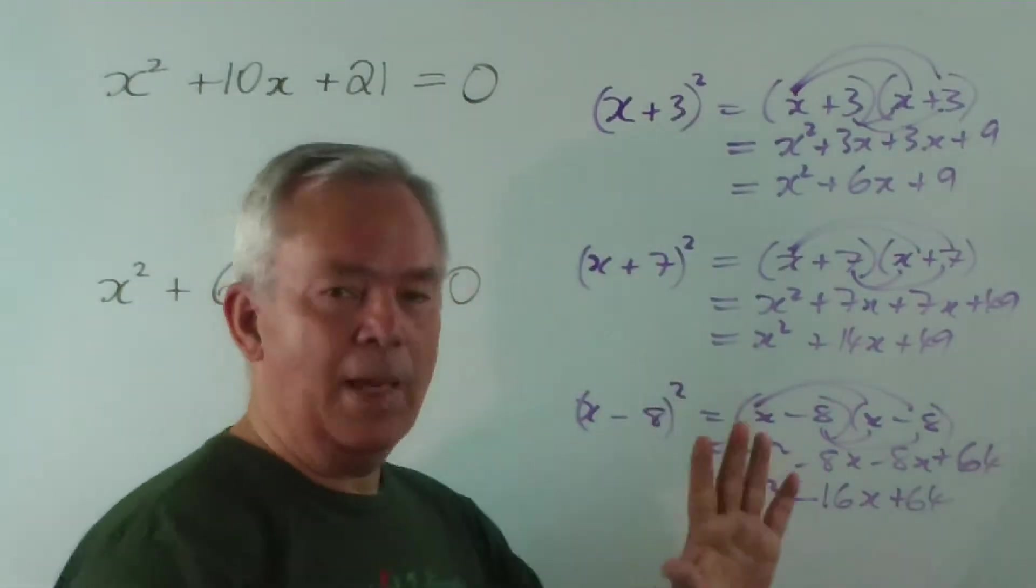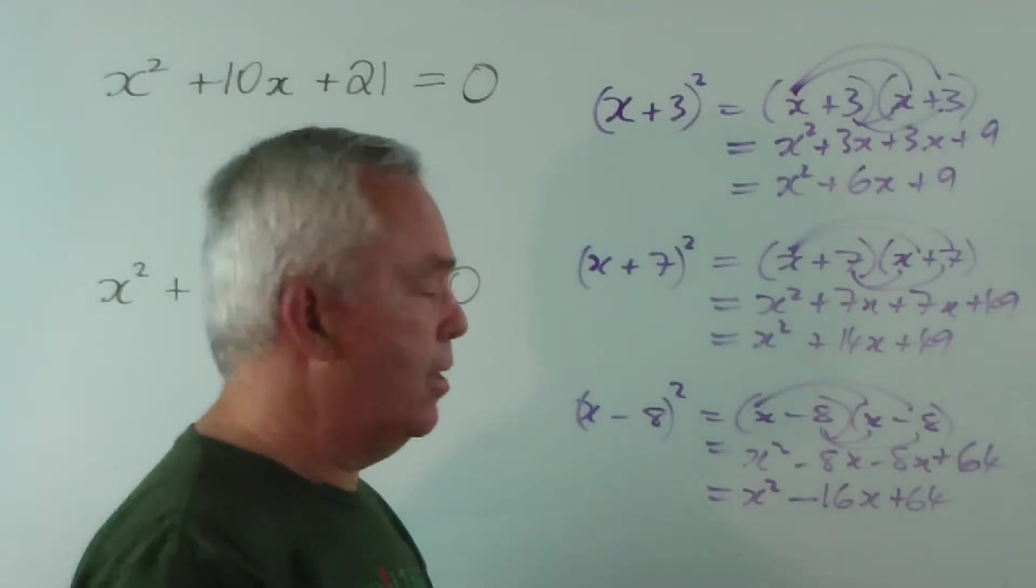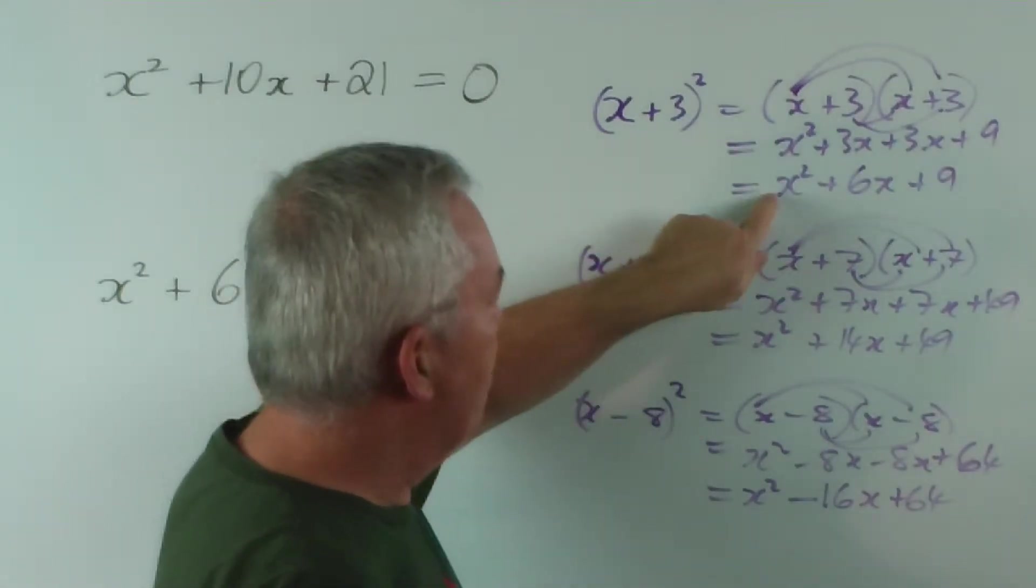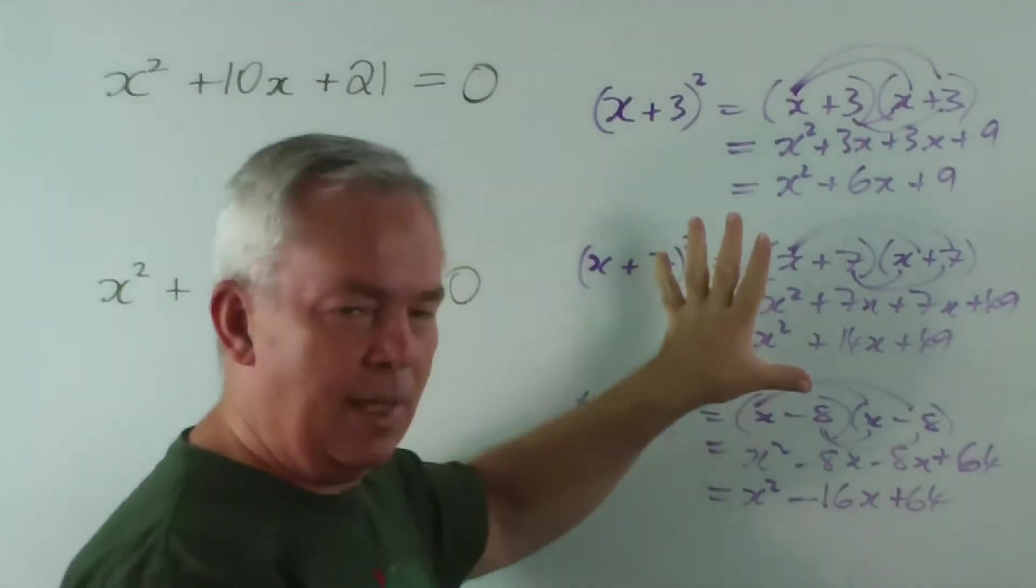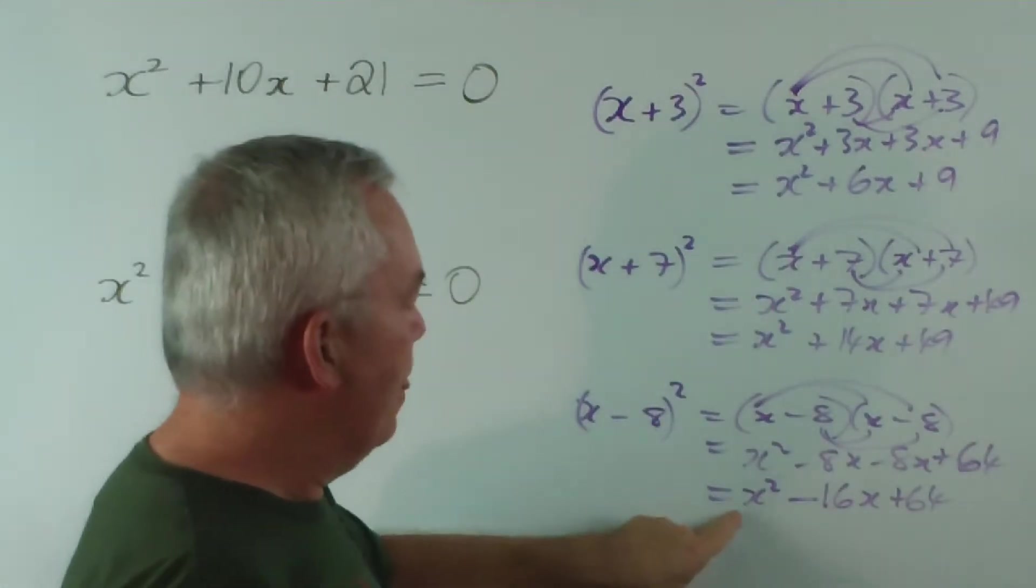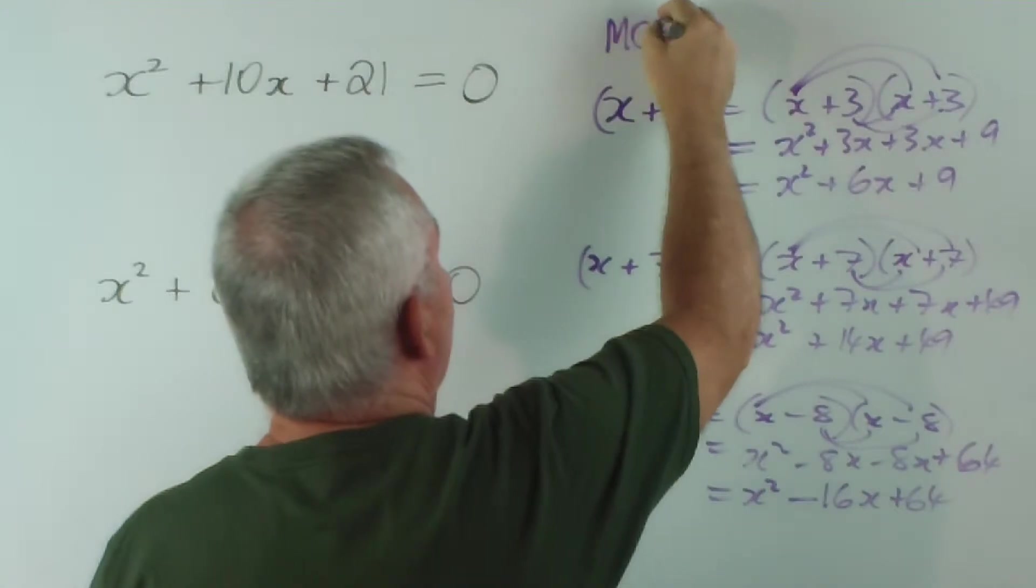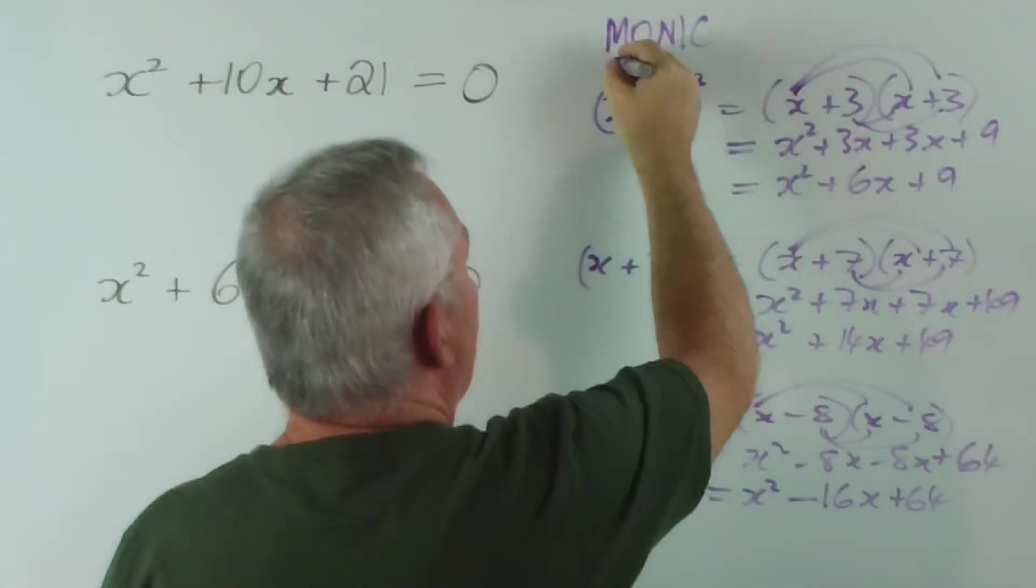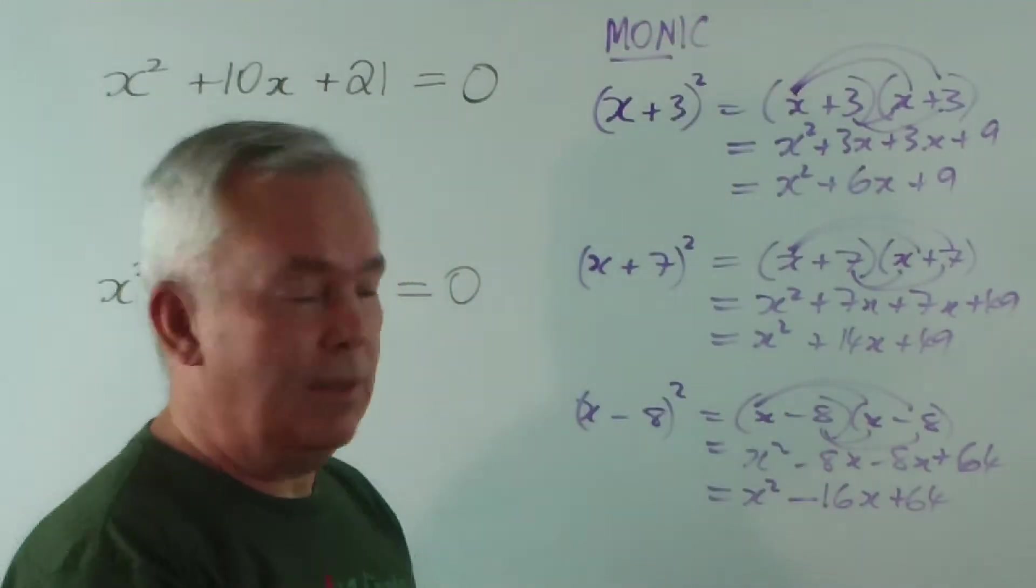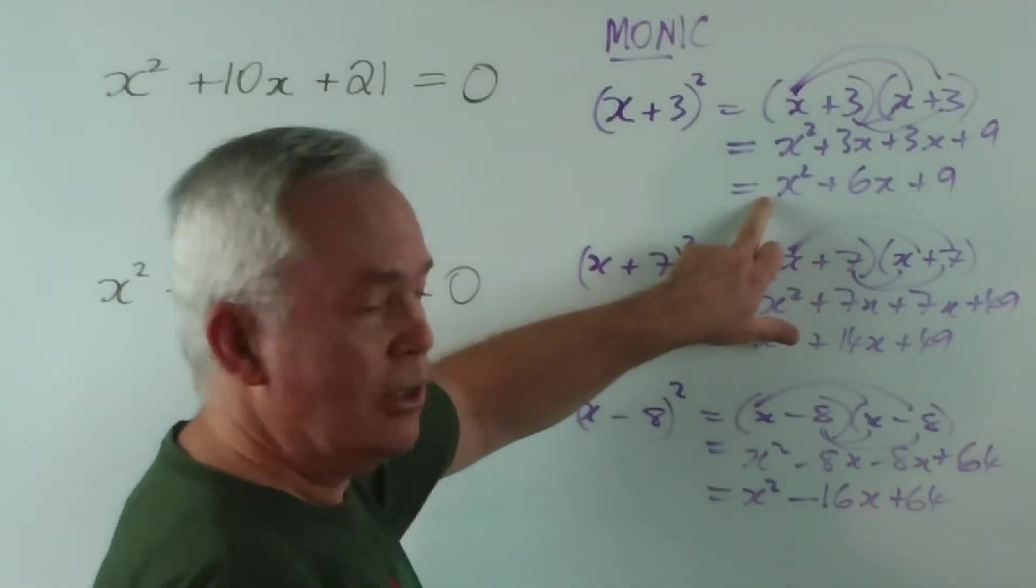Now I'm not talking about what we call non-monic quadratics at this stage - these are ones with numbers in front of the x. I'm just staying with the nice simple ones, we call these monic. Monic quadratics - mono of course means one, and it just refers to the one x² that we have.